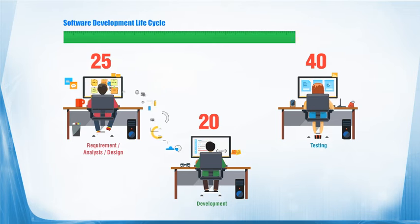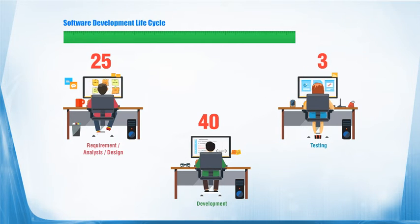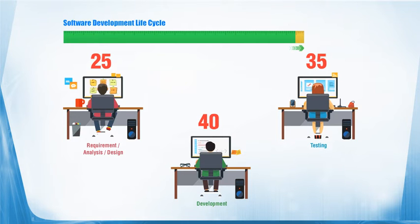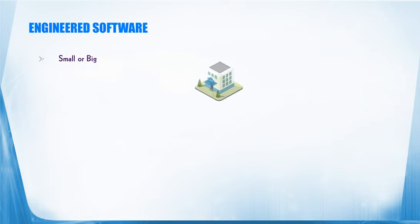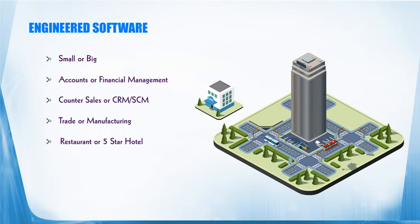Now, what is an engineered software? An engineered software is something which can be for a small or a big business. In fact, it has to cater to literally every department in the business — let it be accounts, financial management, common counter sales, a big CRM, a small trader, or a big manufacturing company. An engineered software will suit customizably to every single organization. According to Wikipedia, engineering is the application of mathematics, scientific, economic, and social knowledge to invent, innovate, build, or organize things which will ultimately cause the economy to grow. Here, I am relating engineering with economics because any product that comes out of proper engineering should contribute to the country's growth in terms of economics.